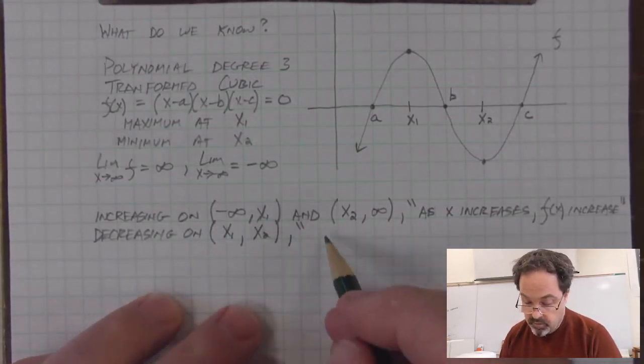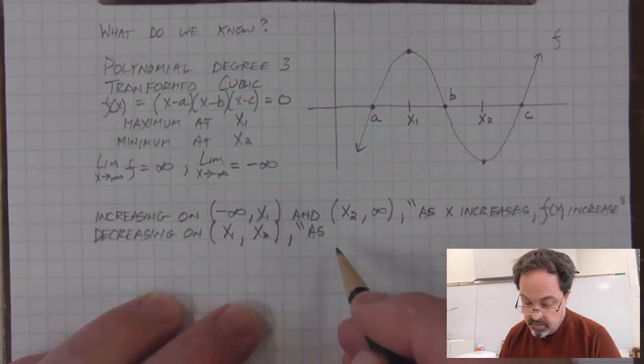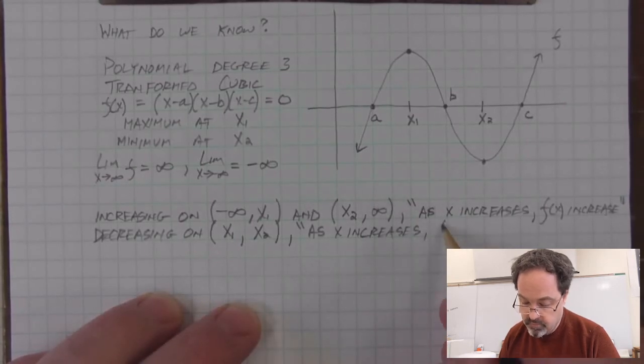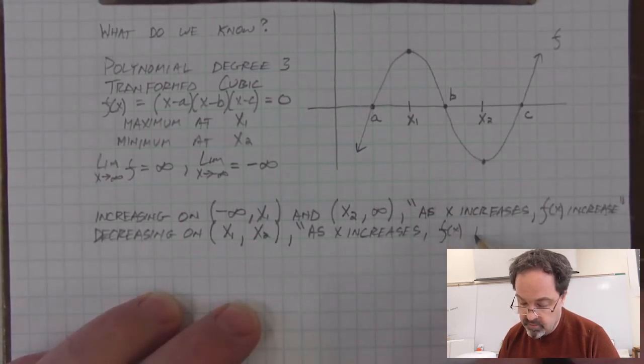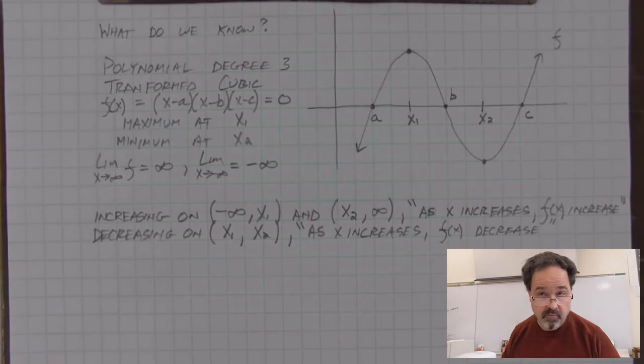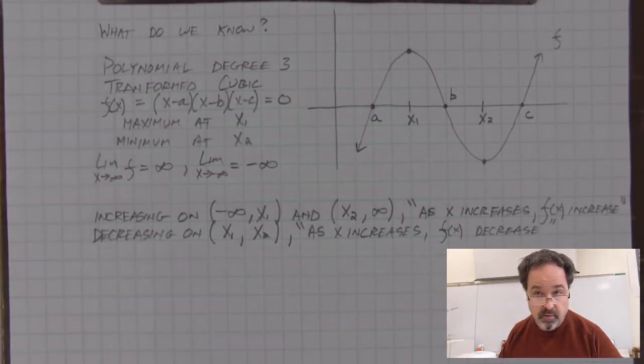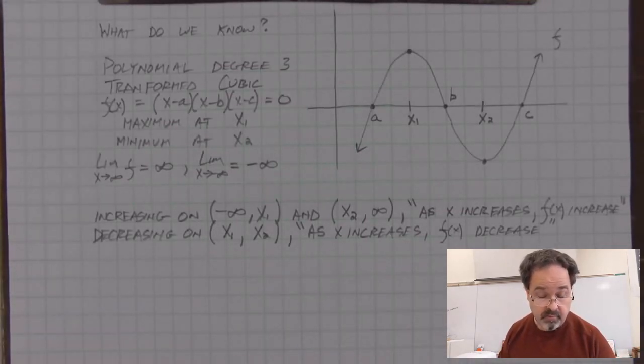Informally, we can think as x increases, the values of the function f of x decrease. Again, we put it in quotes because this is an informal understanding. But it's sufficient to understand what's going on, but we wouldn't use this understanding to prove it if we were expected to.